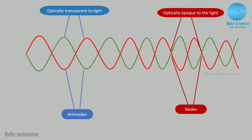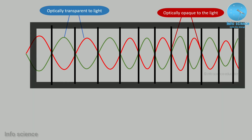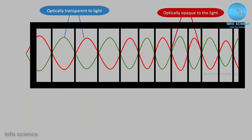This node is optically transparent to the light, and this other node is optically opaque to the light. So we have a grating model with alternate dark and white lines. The white line is transparent and the dark line is opaque. The difference in these acts as a grating, so we have a grating with light diffracting in different directions.